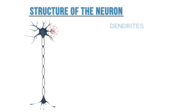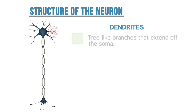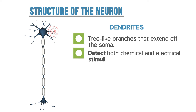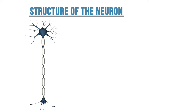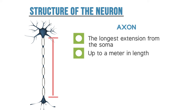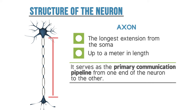Next are the dendrites, which are tree-like branches that extend off of the soma. These are used by the neuron to detect both chemical and electrical stimuli. In the center of the neuron is the axon. The axon is the longest extension from the soma and can be up to a meter in length. It serves as the primary communication pipeline from one end of the neuron to the other.